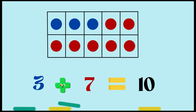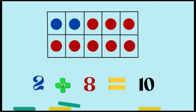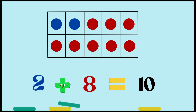All righty, now we have two blue dots and eight red dots. The number sentence for this will be two plus eight — say with me — equals 10. So two and eight make 10.